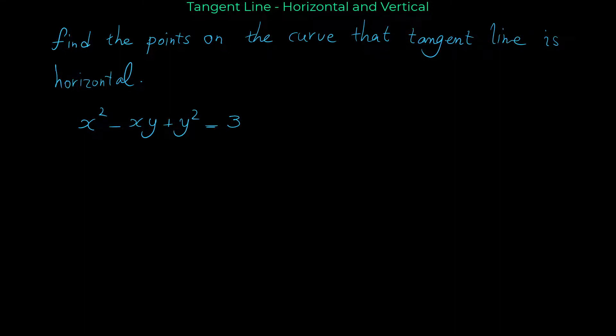In this video, I'm going to show you how we can use implicit differentiation for finding the points on a curve where the tangent line is horizontal or vertical. The given curve is x² - xy + y² = 3. We want to find the points where the tangent line is horizontal.